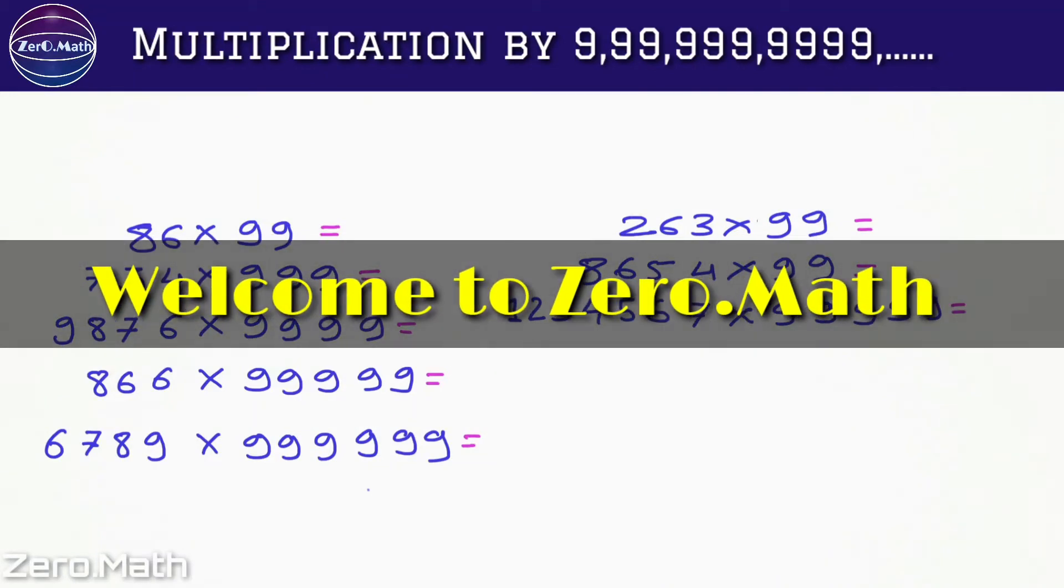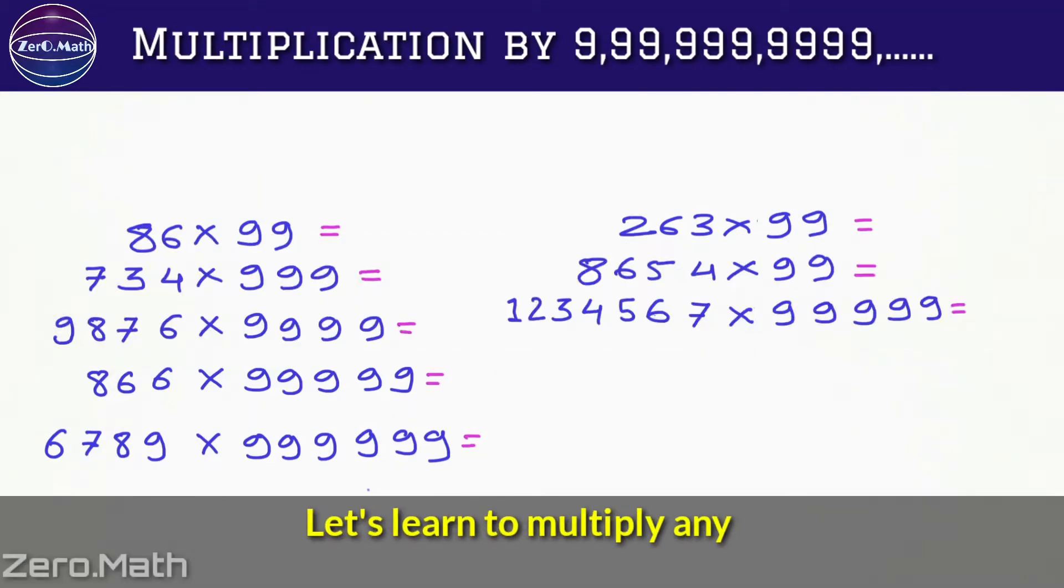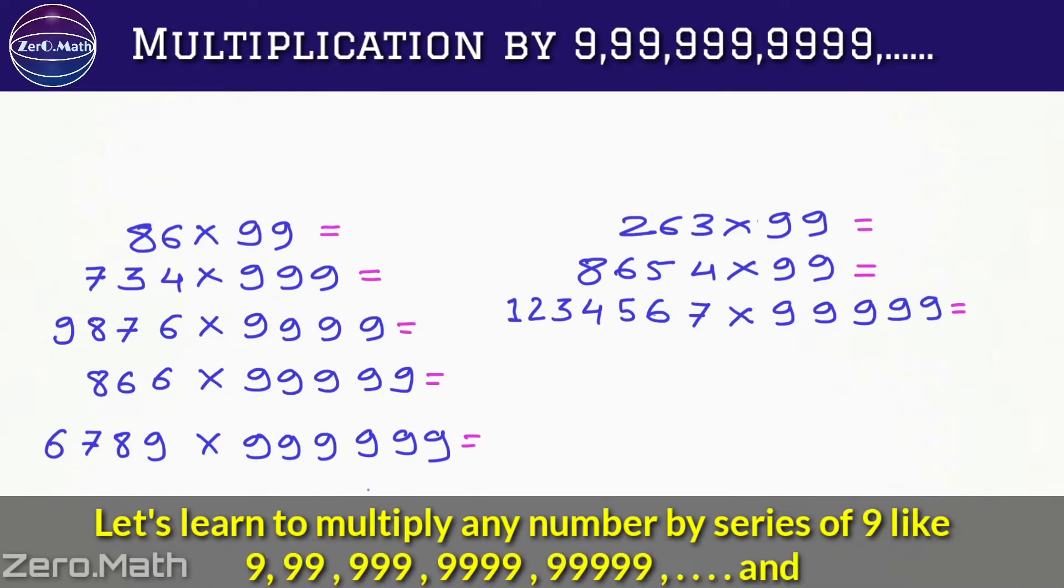Hello friends, welcome to ZeroMath. Today I'm going to explain the simplest trick to multiply any number with the series of 9, like double 9, triple 9, 9999, 99999, and so on.